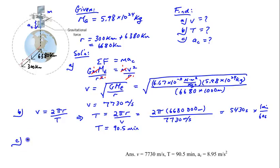Now let's get the radial acceleration. That's the centripetal acceleration, which is velocity squared divided by r. The velocity was 7,730 meters per second squared divided by r, which is 6,680,000 meters.